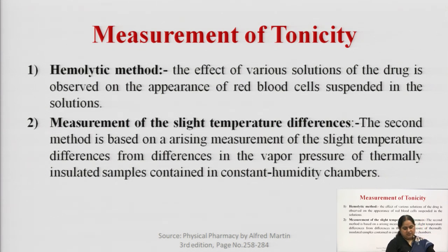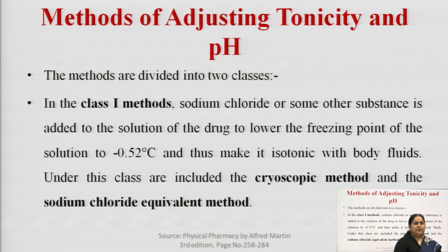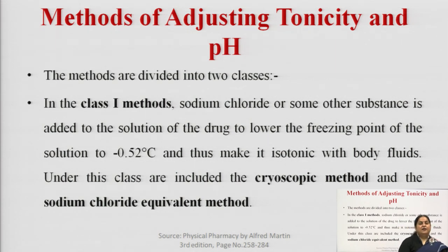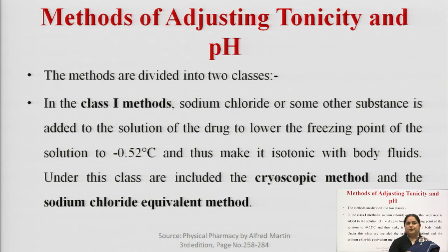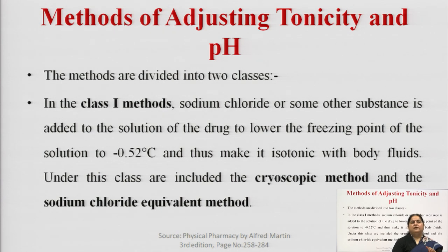These are the two methods for measurement of tonicity, the first being very popular. Once we know the tonicity is not the same, we need to adjust it to make a formulation suitable for the patient. The methods for adjusting tonicity are divided into two classes. In class one methods, sodium chloride or some other substance is added to the solution of the drug to lower the freezing point to minus 0.52 degrees centigrade, thus making it isotonic with body fluids.